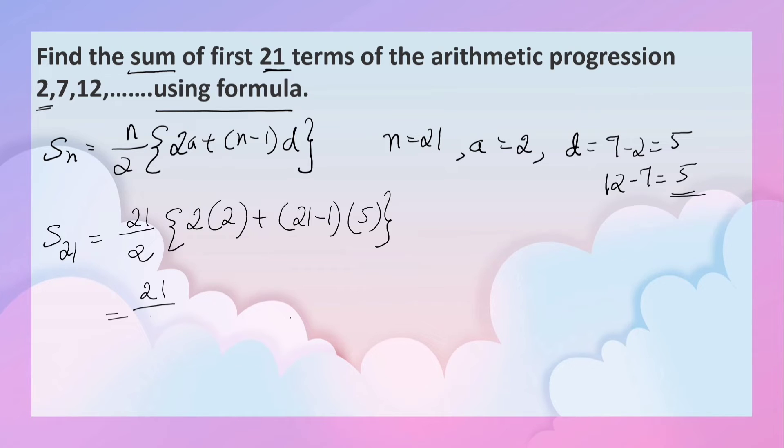21 by 2 into 2 into 2, 4 plus 21 minus 1, that is 20 into 5.